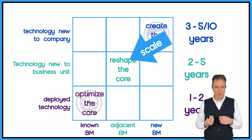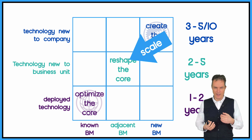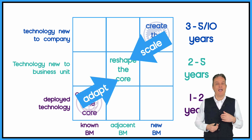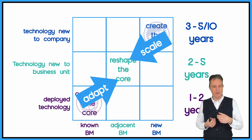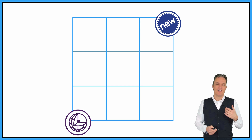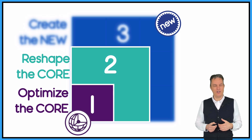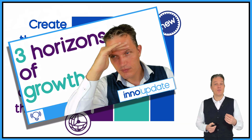Everything developed in the 'creating new stuff' space has to be scaled — experimentation is easy, but scaling must happen in the playing field of reshaping the core. If you do incremental innovation you have to adapt your business model, and to make full use of it you also have to reshape the core. This picture clearly shows what we earlier defined as the three horizons of innovation — check that episode for more.